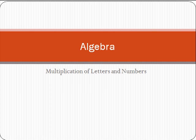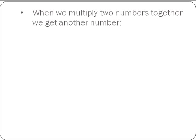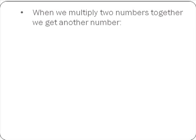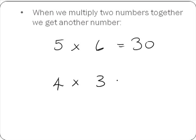Multiplication of letters and numbers. When we multiply two numbers together, we get another number. For example, 5 multiplied by 6 is equal to 30, and 4 multiplied by 3 is equal to 12.